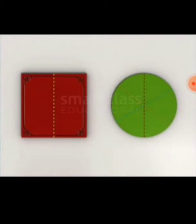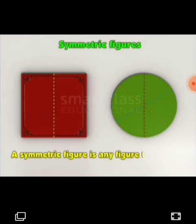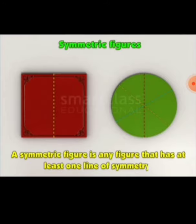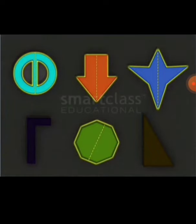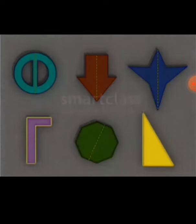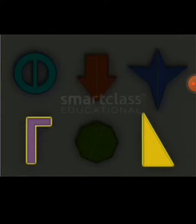Observe the figure carefully. A symmetric figure is any figure that has at least one line of symmetry. Observe the symmetrical figures here. The dotted line is called line of symmetry. A line of symmetry divides a figure into two equal halves.